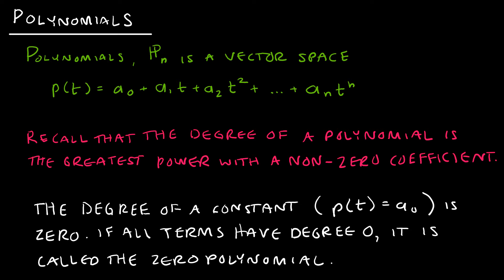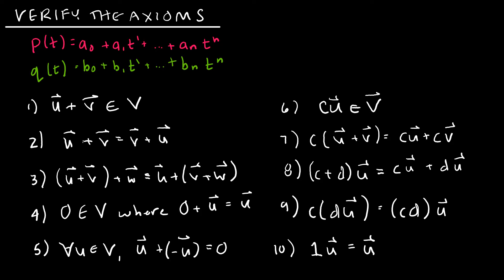Let's take a look at polynomials. Polynomials, in fact, is a vector space, which seems a little counterintuitive. But we can see in the way that this is written, that it's written very much like a linear combination of scalars and vectors. Same idea. And remember that the degree of a polynomial is the greatest power with a non-zero coefficient. So in this example, n would be the degree of my polynomial, assuming that a_n is not 0. And the degree of a constant is 0. So for instance, if my polynomial was just equals a_0, meaning I don't have a t or a t squared or a t to the n, then that is the 0 degree. And if all terms have degree 0, then obviously the highest degree would be 0. And that's called the 0 polynomial.